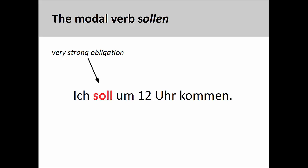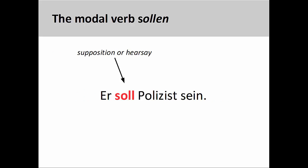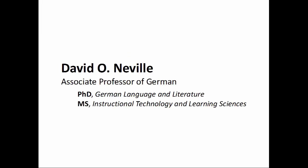Finally, the modal verb sollen indicates a very strong obligation, a sense of being supposed to do something: Ich soll um zwölf Uhr kommen — I ought to come at twelve o'clock. The modal verb sollen can, in certain contexts, also express supposition or hearsay: Er soll Polizist sein — he is supposed to be a police officer.